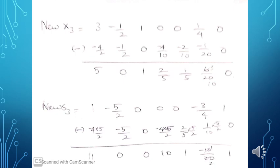New X3 = old X3 row minus (-1/2) × new pivot equation. Old X3: [3, -1/2, 1, 0, 0, 1/4, 0]. Minus (-1/2) × [4, 1, 0, 4/5, 2/5, 1/10, 0] = [-2, -1/2, 0, -2/5, -1/5, -1/20, 0]. Subtracting gives new X3 = [5, 0, 1, 2/5, 1/5, 3/10, 0]. New S3 = old S3 minus (-5/2) × new pivot equation. Old S3: [1, -5/2, 0, 8, 0, -3/4, 1]. Minus (-5/2) × [4, 1, 0, 4/5, 2/5, 1/10, 0].